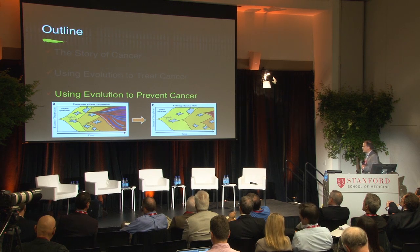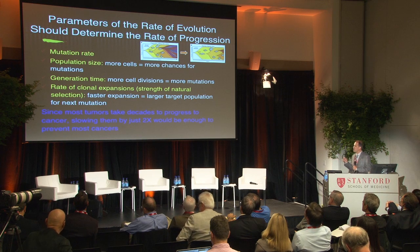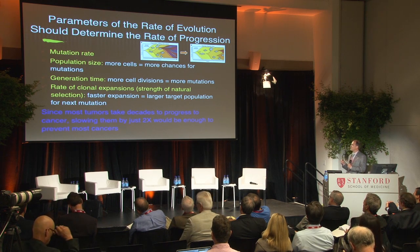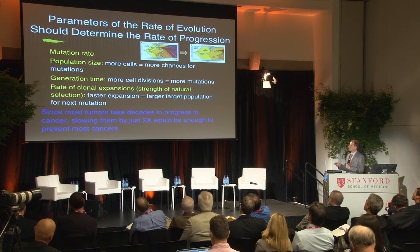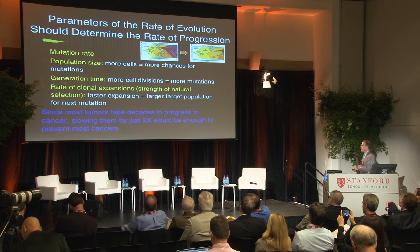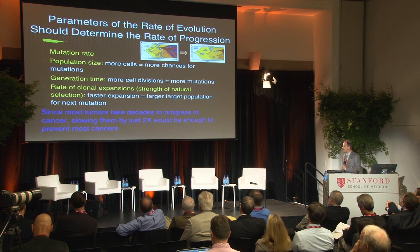There are also things we can do to prevent cancer. As mentioned, there are parameters we can analyze that affect the rate of evolution and that we predict would predict the rate of progression to malignancy. Those parameters are the mutation rate, the population size, the generation time — all going into generating variation — and the rate of clonal expansions, which is the strength of natural selection. Since most tumors take decades to develop — 20 to 50 years in most cancers — if we could change that rate by just a factor of two, you would not die of cancer. You'd die of something else. This is a huge opportunity.